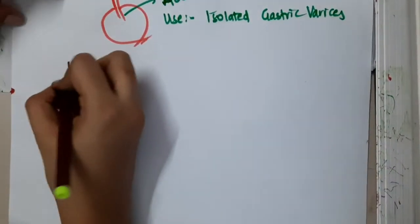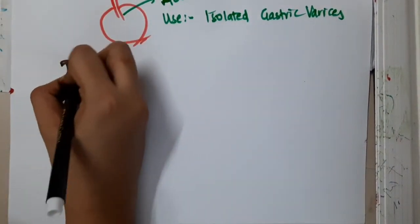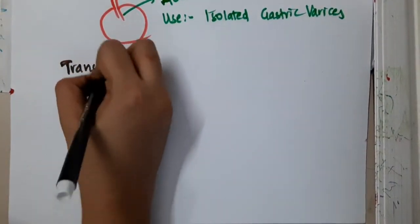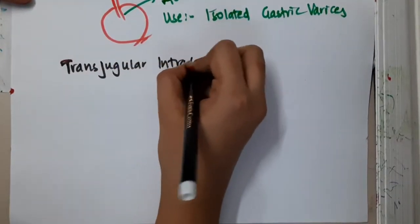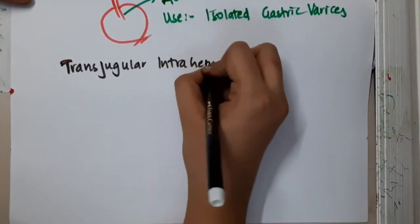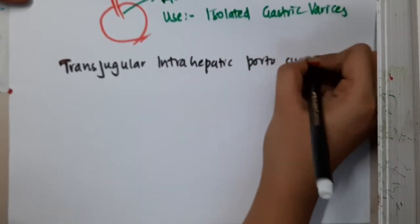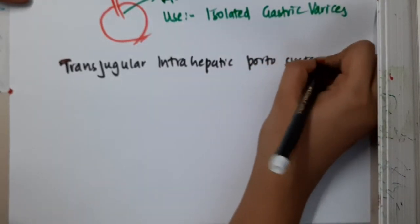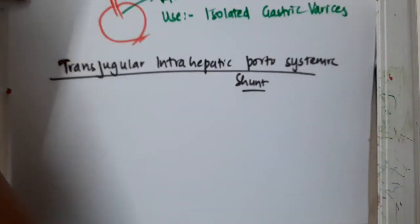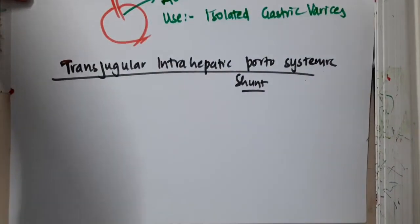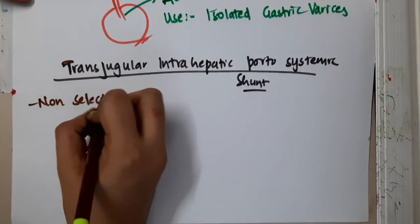Hello friends. Let us now learn some important points about the transjugular intrahepatic portosystemic shunt — TIPS. This is actually a non-selective shunt.